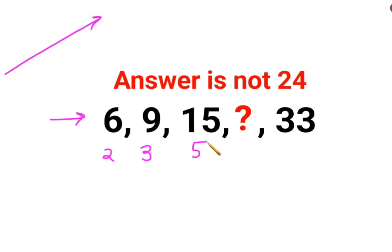And 3 into 11 gets you 33. So now if you look at these numbers, all of these are prime numbers. But there is one prime number which happens to come between 5 and 11.